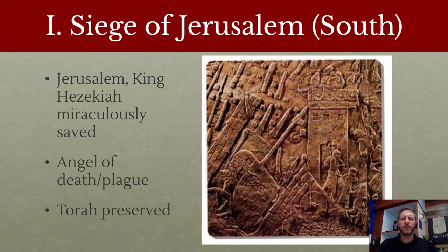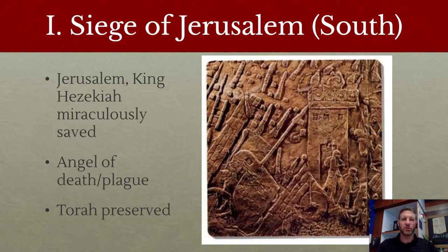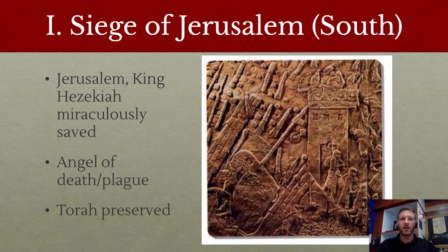The key significance of Jerusalem's salvation is that because Jerusalem is saved, the Torah is preserved. There's really no remnant of much of the ten tribes — they didn't preserve their Jewish heritage. Had Sennacherib breached the walls of Jerusalem and destroyed the temple and relocated them like the other ten tribes, it's very likely we would not have Jews today. This is considered one of the big turning points in history — the fact that Sennacherib and the Assyrians failed to conquer Jerusalem.